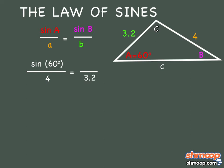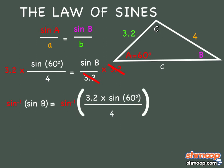We have sine of 60 degrees over 4 equals sine of the angle at point B over 3.2, the side length of b. To solve for angle B, we can multiply both sides by 3.2. We want B, not sine B. So if we take the inverse sine of each side, we see that B is around 43.9 degrees.